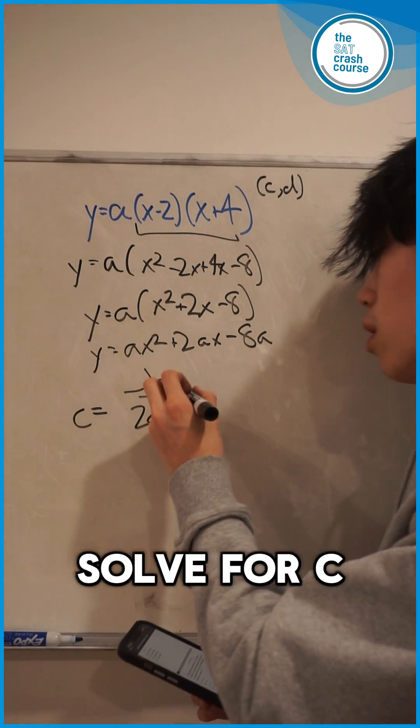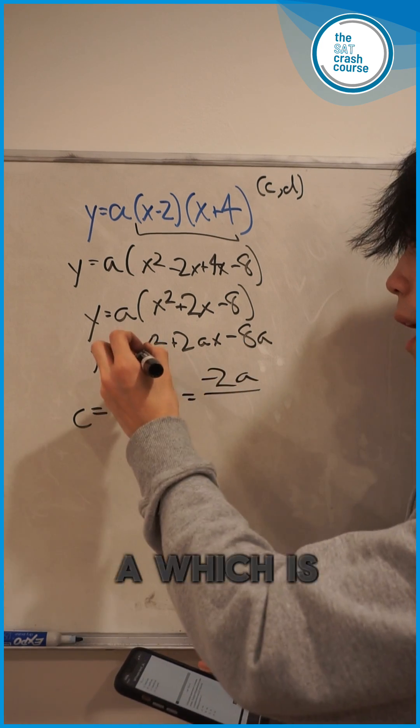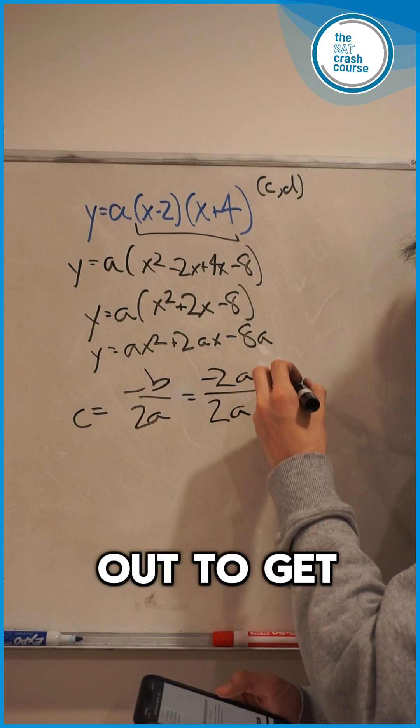So to solve for c, we'll put negative b, which is negative 2a, over 2a. This cancels out to get us negative 1.